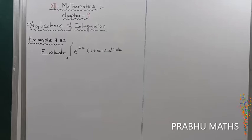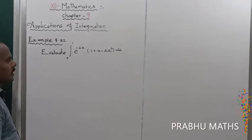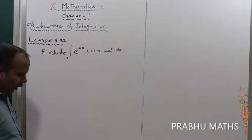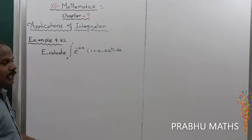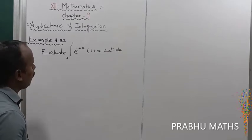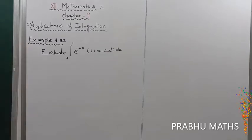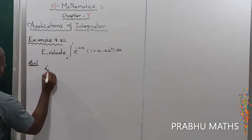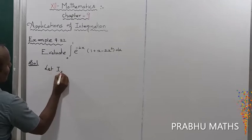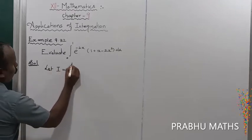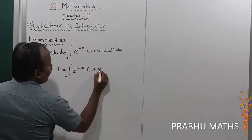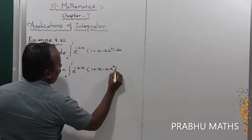Example 9.3: evaluate the integral from 0 to 1 of e^(-2x) into (1 + x - 2x³) dx by using Bernoulli's formula. Let us consider I is equal to the integral from 0 to 1 of e^(-2x) into (1 + x - 2x³) dx.